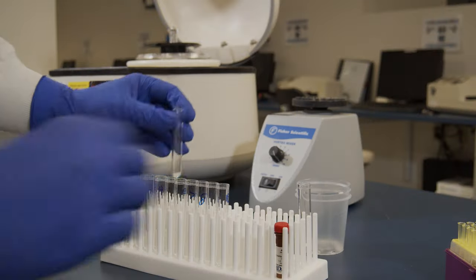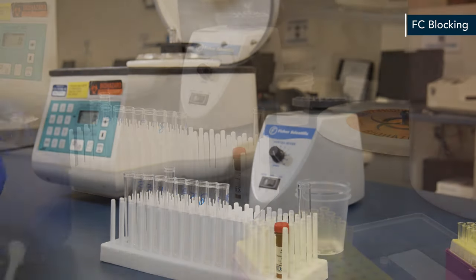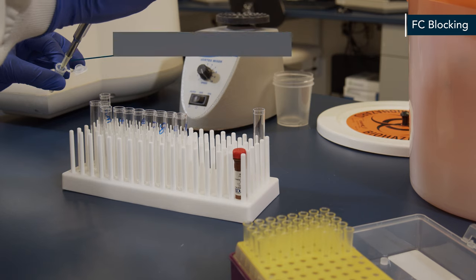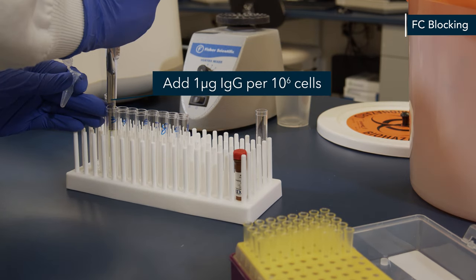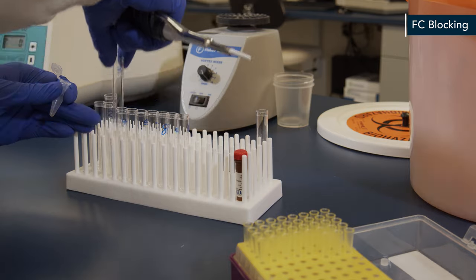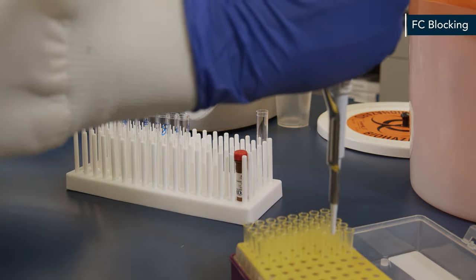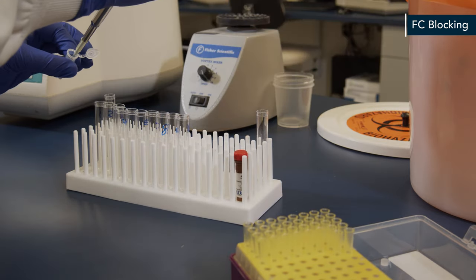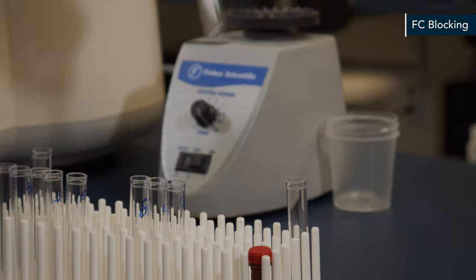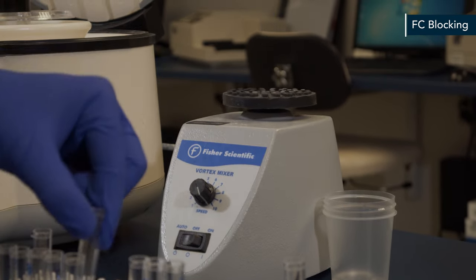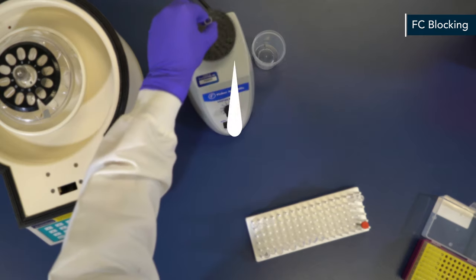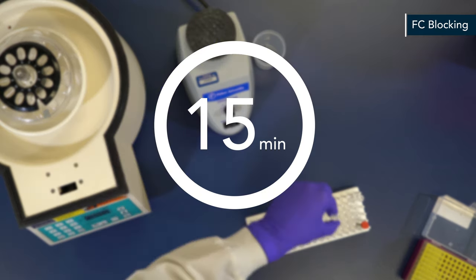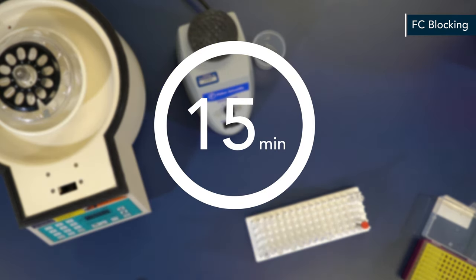At this point, you may want to FC block cells with blocking IgG. Add 1 microgram IgG per 1 million cells. Vortex tubes and then incubate for 15 minutes at room temperature. FC block is a way to prevent the non-specific binding of your antibody of interest to cells expressing FC receptors such as monocytes and B cells. At the end of the incubation time, do not wash excess blocking IgG from the reaction.